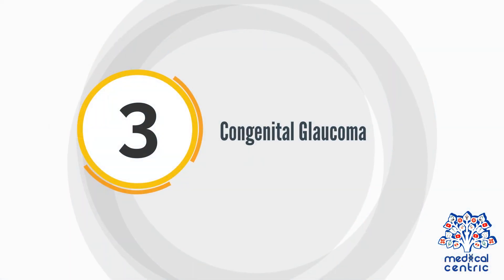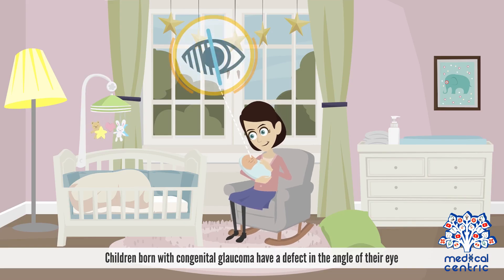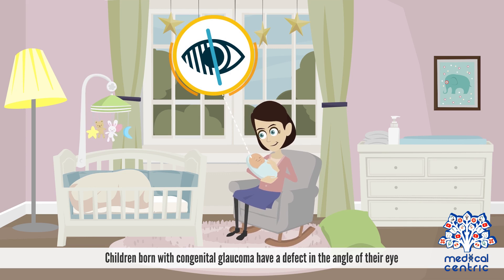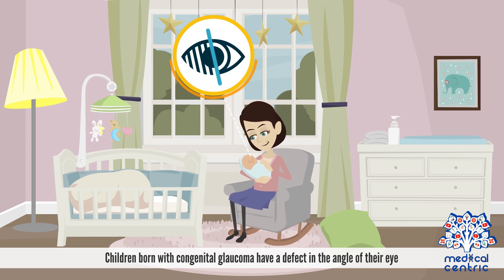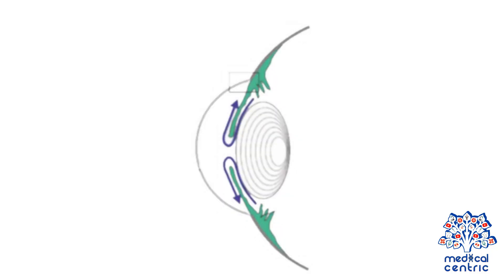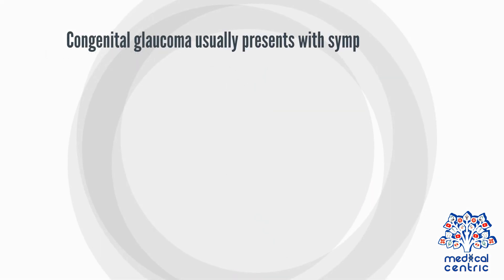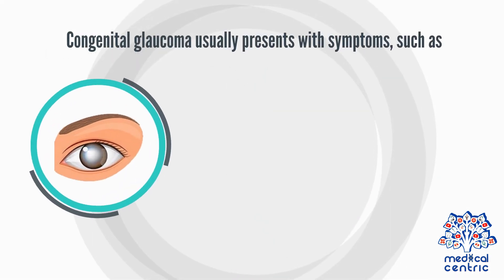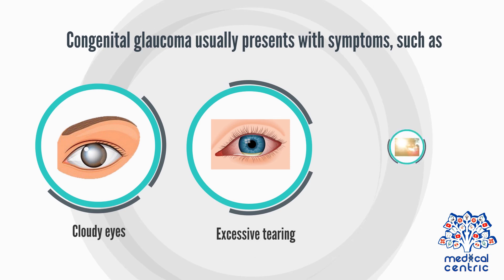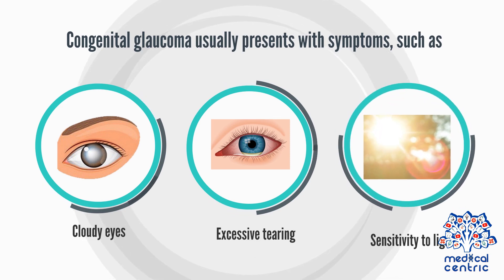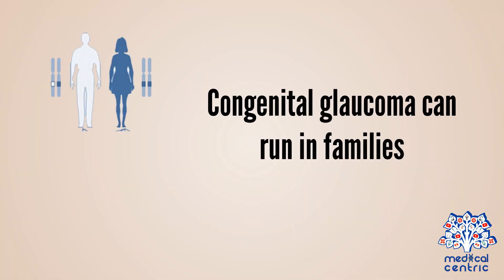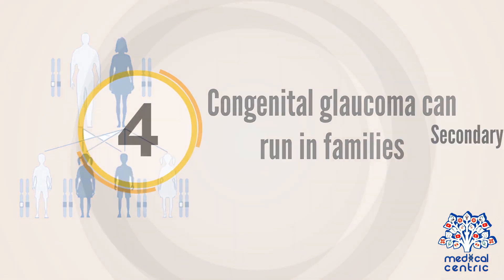Congenital glaucoma. Children born with congenital glaucoma have a defect in the angle of their eye, which slows or prevents normal fluid drainage. Congenital glaucoma usually presents with symptoms such as cloudy eyes, excessive tearing, or sensitivity to light. Congenital glaucoma can run in families.